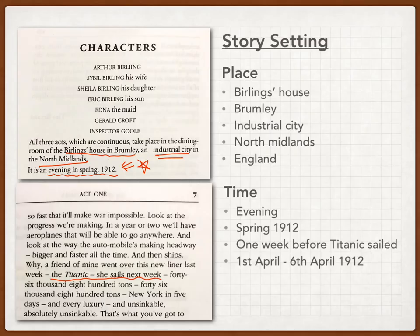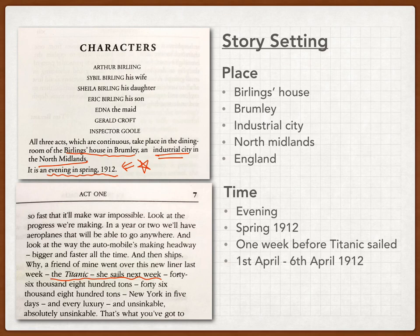On the first page of your book, where you can find the characters list, you can find more information about the story setting, including the place and the time of the story. If you look at the first paragraph of the first page, you will know that this story is set at Birling's house at Brumley, which is an industrial city in North Midlands in England.